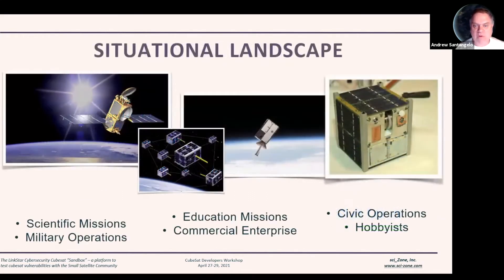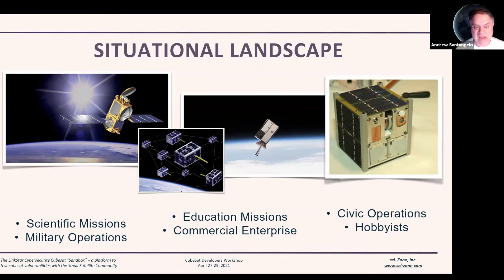So let's quickly go over the situational landscape which you all are familiar with. CubeSats can be found in scientific missions, military operations, educational missions, commercial enterprise, and even civic operations and hobbyists. Even a hobbyist can take a small satellite and put it into orbit. When we see this range, we also see a range of vulnerabilities in these CubeSats. Certainly military operations will have secure CubeSats in orbit, but maybe not as secure on an educational mission, a hobbyist mission, or even a commercial mission.